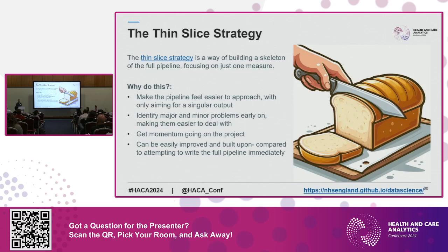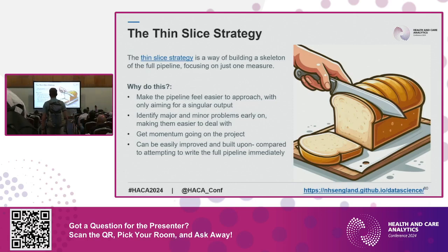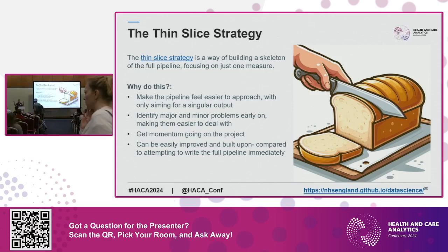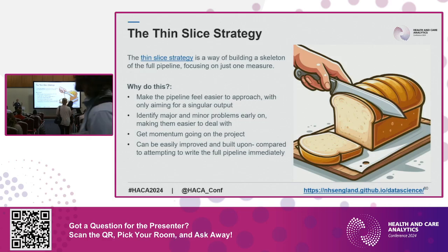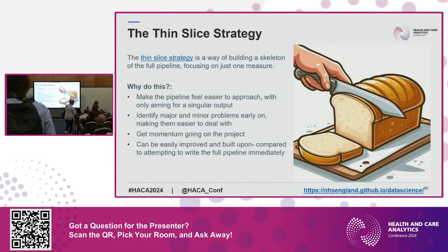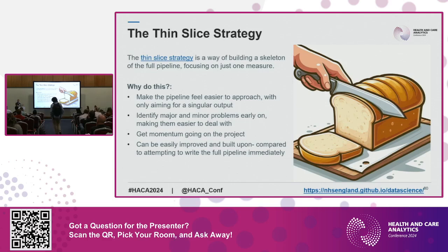Before you start a single line of code, plan out what we call the thin slice. The temptation might be to start at the data source and work step by step to the end, but a better way is to take one thin slice end to end — which might be just producing one statistic or one number from your report. That way, by the time the RAP team moves on and leaves the team by themselves, everyone has had exposure to all the different parts of the process: importing data, processing data, exporting data, transforming data.